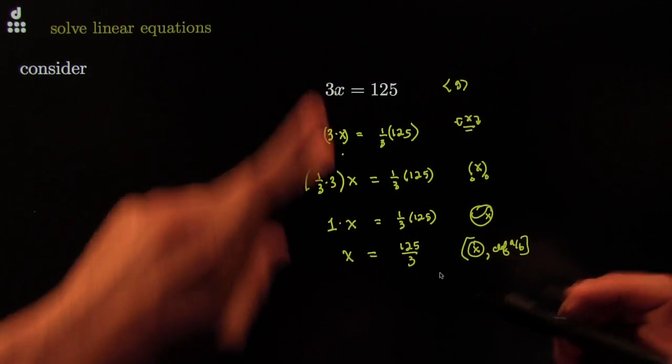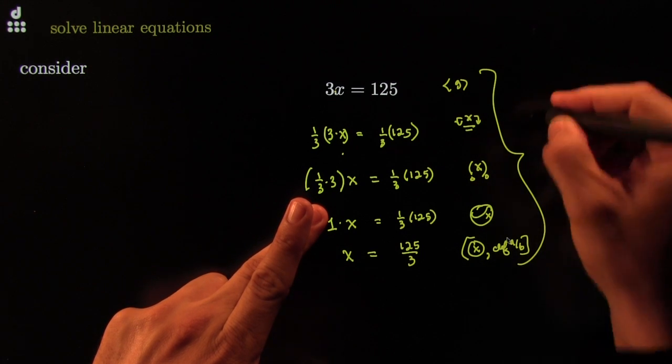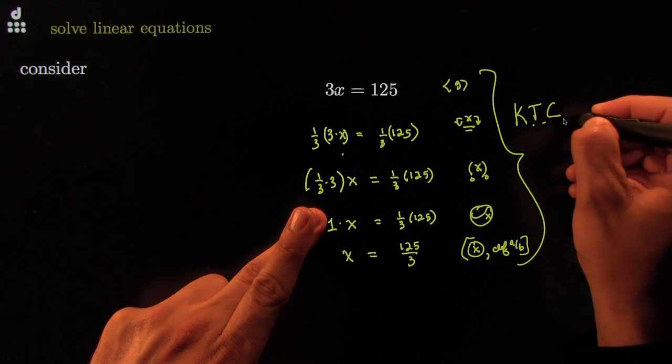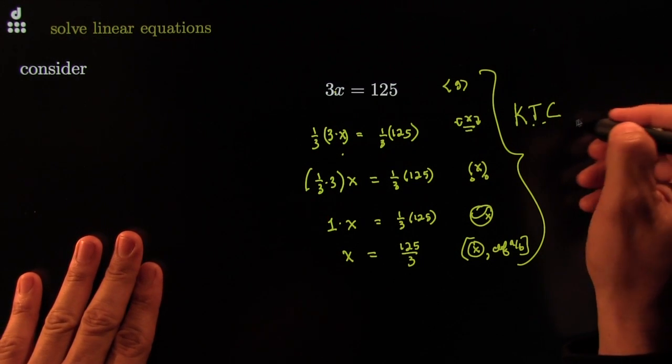These steps are so common that we package them. We package them. And it's just called kill the coefficient.